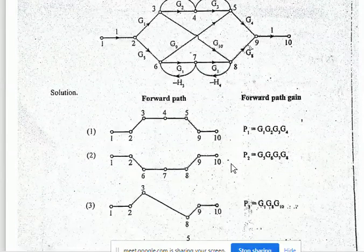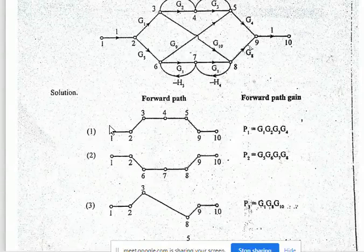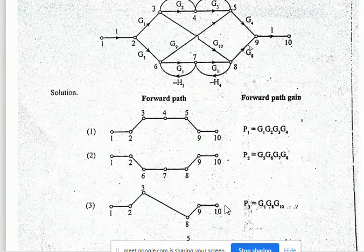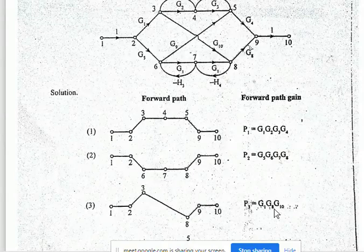The third forward path is 1 to 2, 2 to 3, 3 to 8, 8 to 9, 9 to 10. The forward path gain P3 is equal to 1 × G1 × G10 × G8.